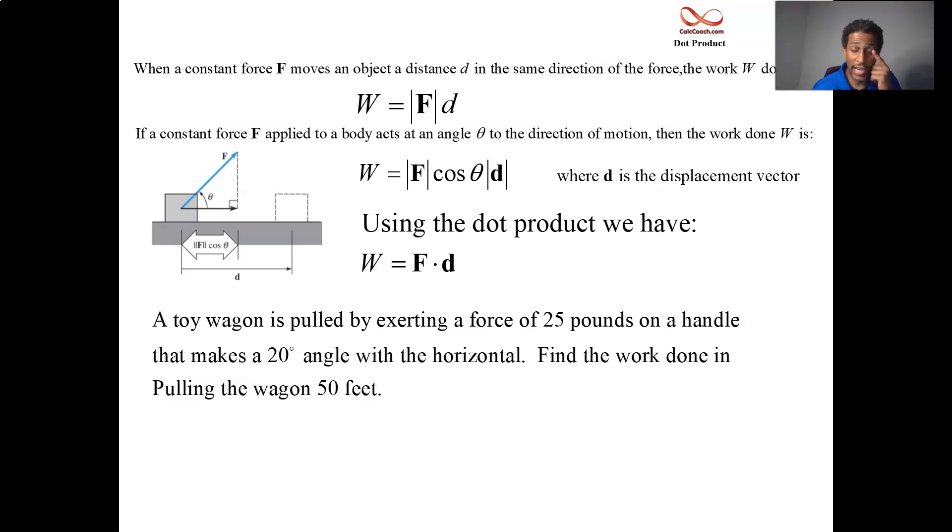You have the magnitude of the force times the magnitude of displacement times the cosine of the angle between them. Or you can set it up with vectors. We can actually have the component form of the force vector. The i component of it is the magnitude of the force times the cosine of the angle, and the j component is the magnitude of the force times the sine of the angle. So what's the displacement vector? It's going to be 0 in j and it's going to be 50 in i. You're going to move it 50 feet. That's the displacement. You're going to move the wagon 50 feet.